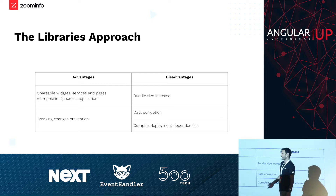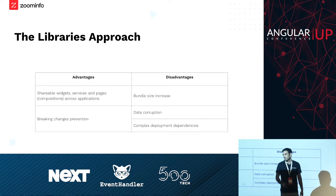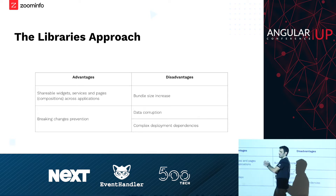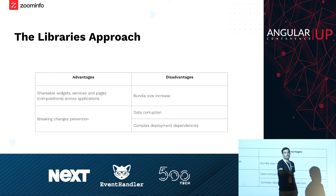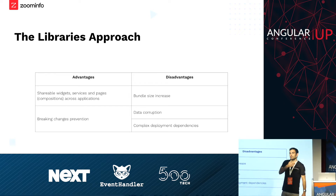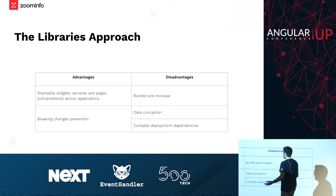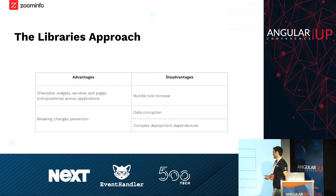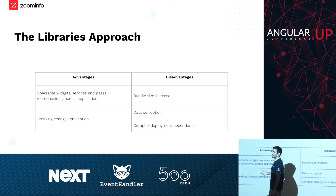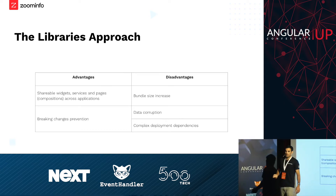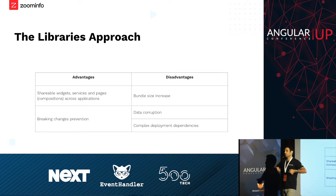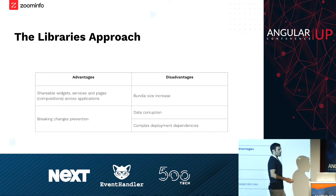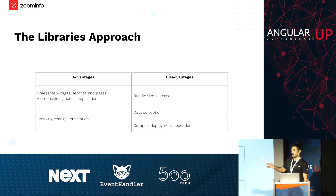Performance becomes worse, and that's not what I want from microfrontends. There's also data corruption: maybe version 1.2 is storing data in some way, and version 2.0 is overriding the data and storing it in a different way that version 1.2 won't know how to parse. And the third issue, which we still have, is complex deployment dependencies. If I apply a major fix in the user library, I need to resolve all dependencies, upgrade versions, and make sure nothing is broken. So there are pros and cons with this approach, and there is no one-size-fits-all. The library approach is great, but there is another option.